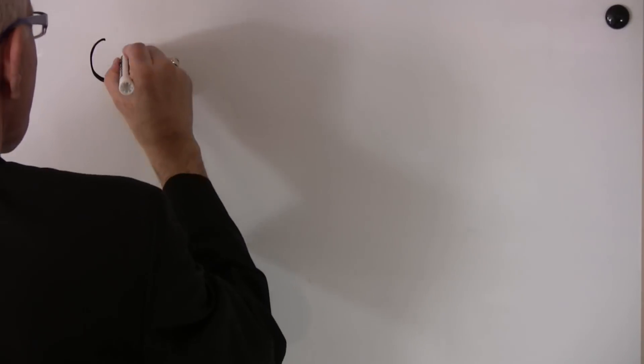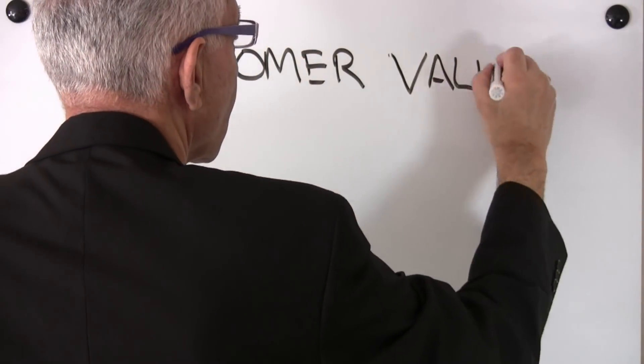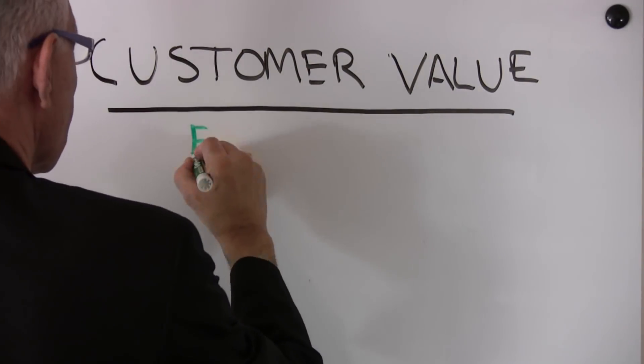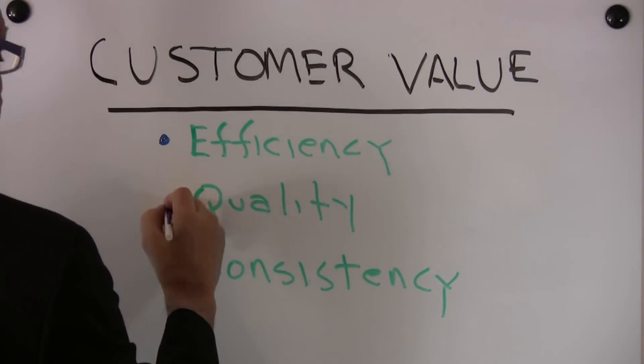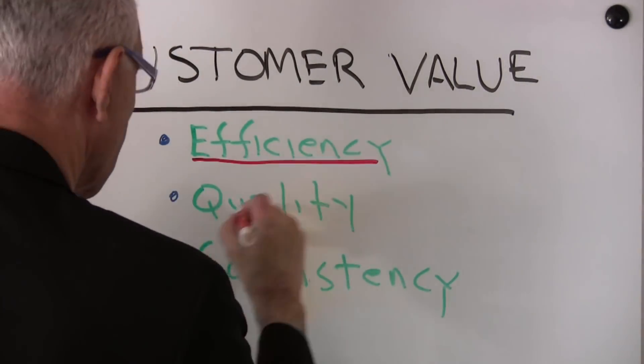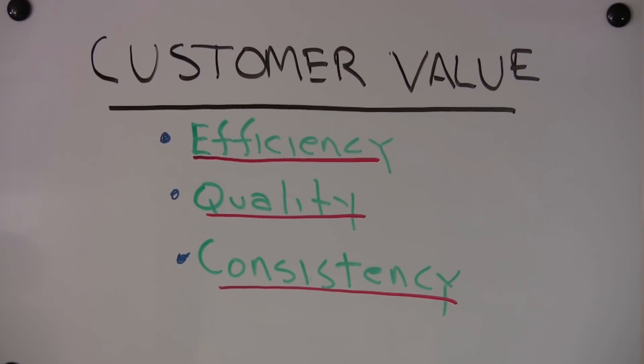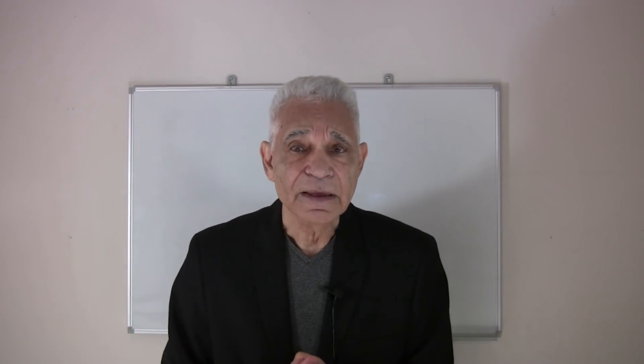Now, how does it do it? It delivers customer value through efficient operations and quality standards. Now, quality standards not just for one unit, but for the next unit and the next. So we say it delivers consistent quality.